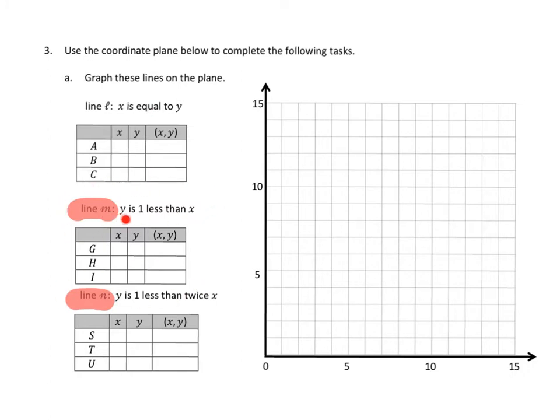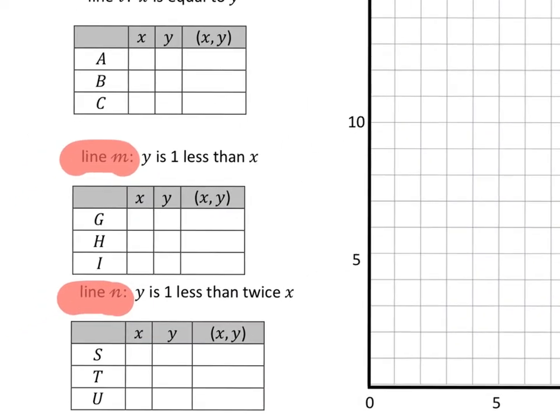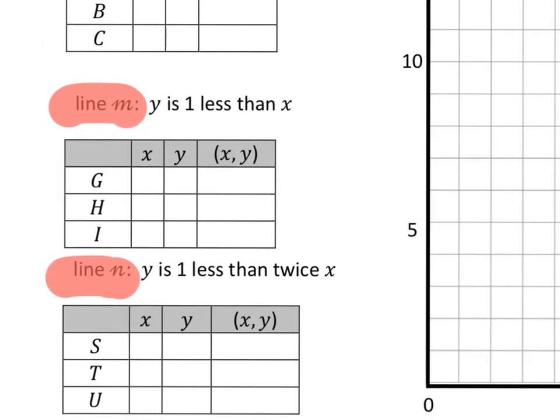Line m, y is one less than x. So whatever value we have for x, y is going to be one less than that. So I'm going to go ahead and zoom in here a little bit for a second because these boxes are really small. So if we had, for instance, an x value of, I don't know, five, I'm going to just say five because I know I saw five out there on the graph. Y would be one less than that, so I guess y would be four. So that would be the point (5,4).